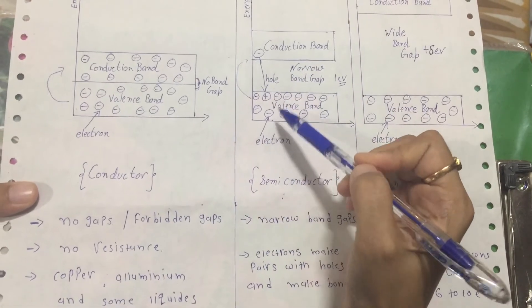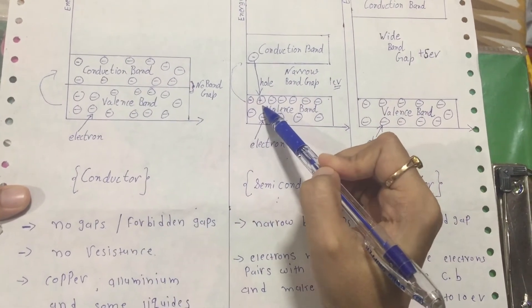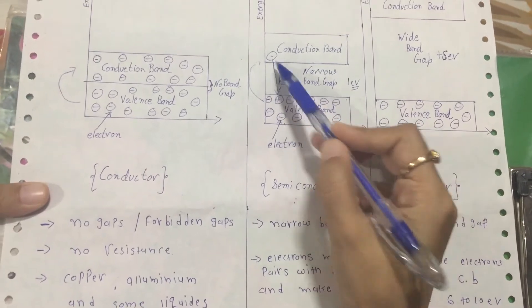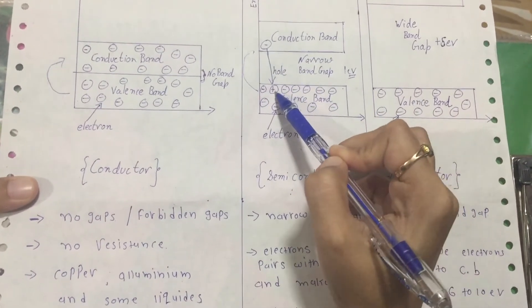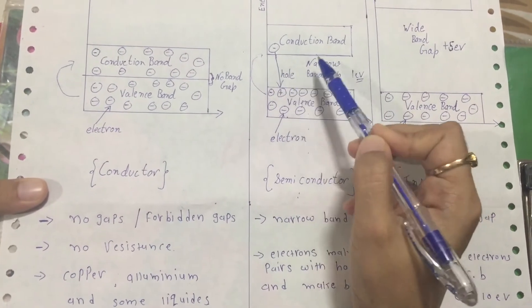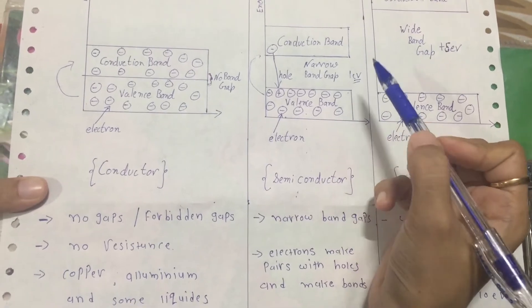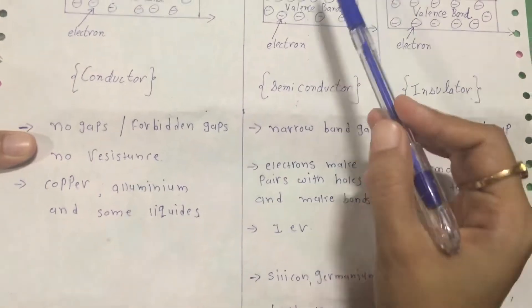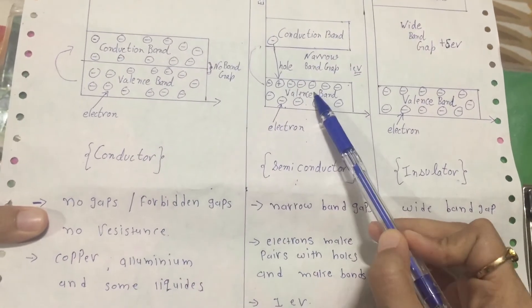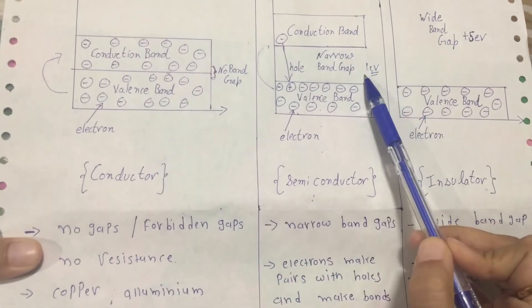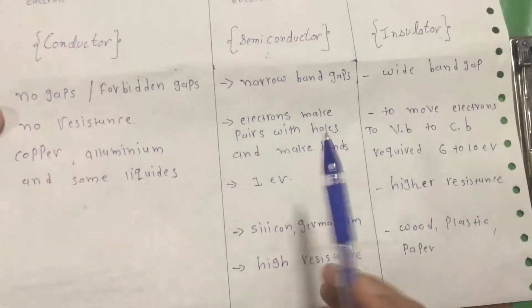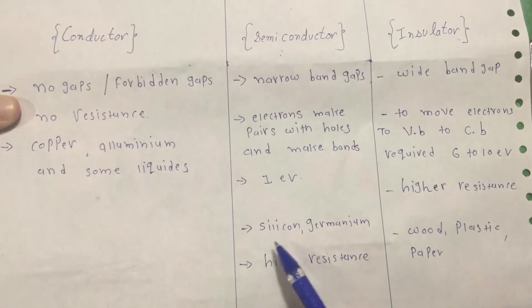When one electron volt is applied to the material, holes and electrons start to bond. Holes are nothing but some empty spaces in the material. When electrons and holes bond with each other, current will pass. There is higher resistance than conductors, but to move electrons from the valence band to the conduction band, you have to apply one electron volt.